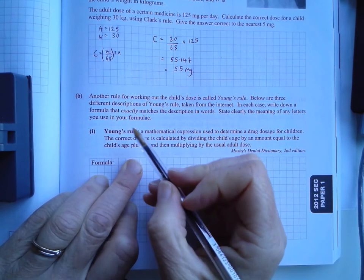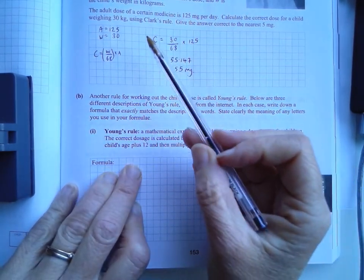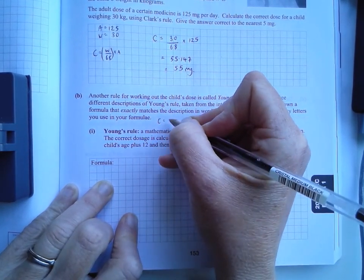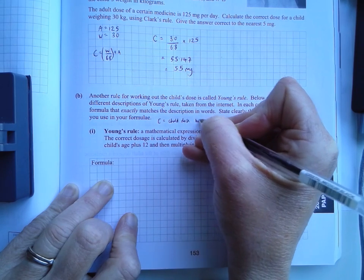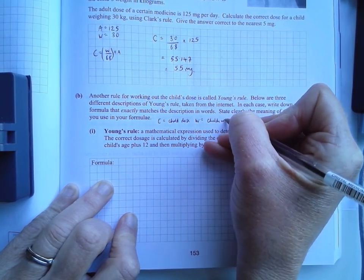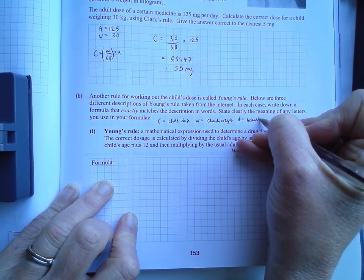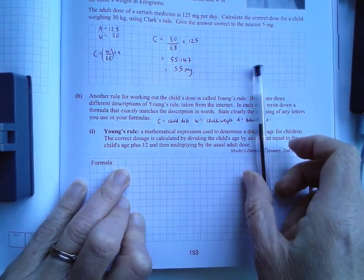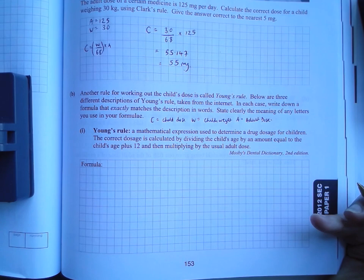State clearly the meaning of any letters you use in your formula. So we might just remind ourselves of some of the variables from last time. We had C, which was the child's dose. W is equal to the child's weight. And A was equal to the adult's dose. So we might want to use those, and that might be helpful to have those. The correct dosage.